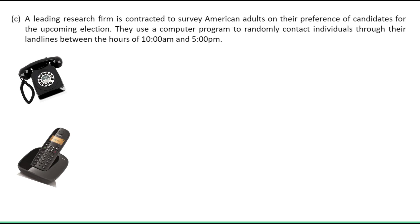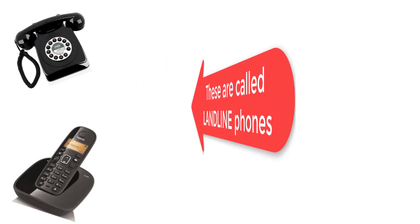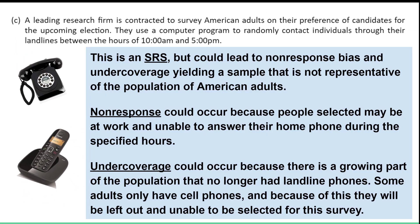Part C: A leading research firm surveys American adults on their preferences of candidates for the upcoming election. They use a computer program to randomly contact individuals through their landlines between the hours of 10 a.m. and 5 p.m. Although this is an SRS — a simple random sample — it could lead to both non-response bias and undercoverage, yielding a sample that is not representative of the population of American adults.